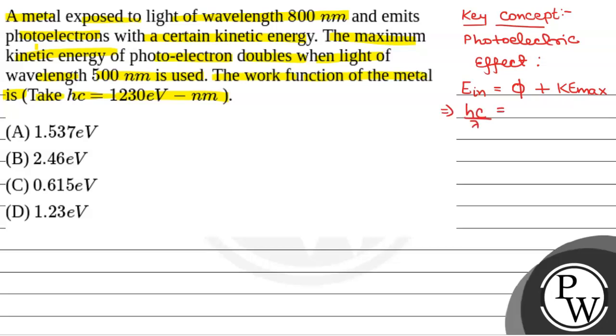That is, Hc by lambda equals work function of metal plus kinetic energy maximum. Now, we have been given when lambda is equal to 800 nanometer, if the kinetic energy is equal to E, then when lambda is equal to 500 nanometer, the kinetic energy will be equal to 2E.